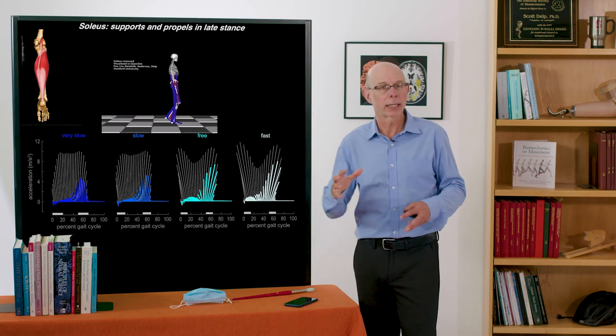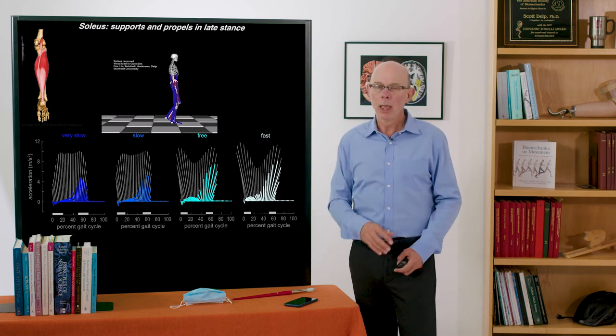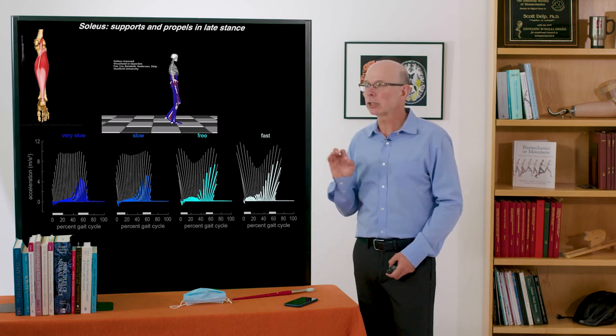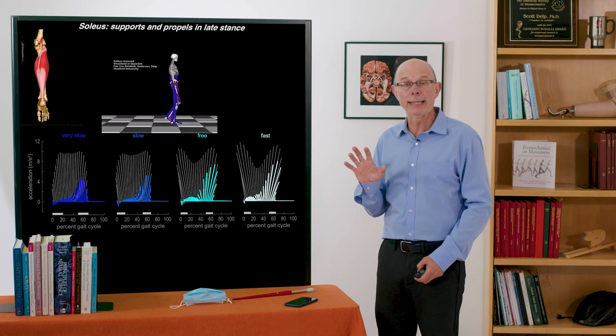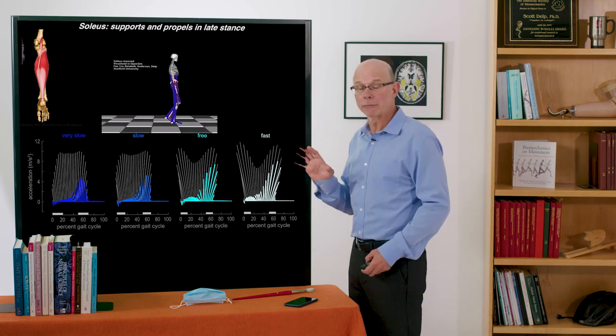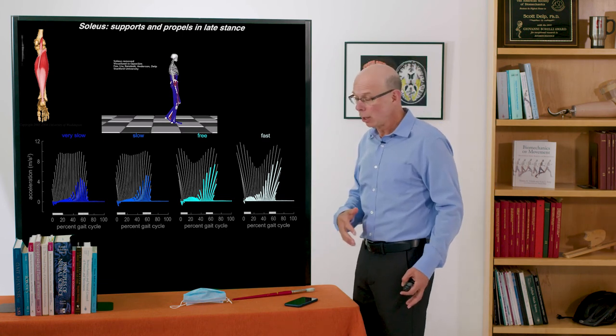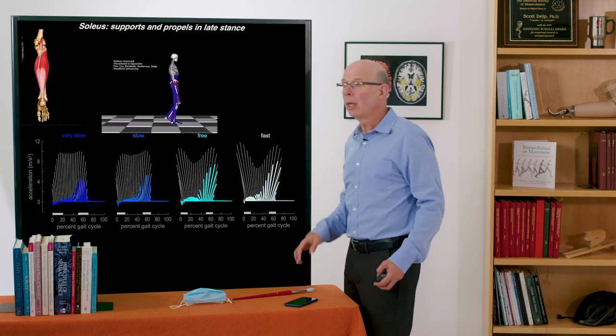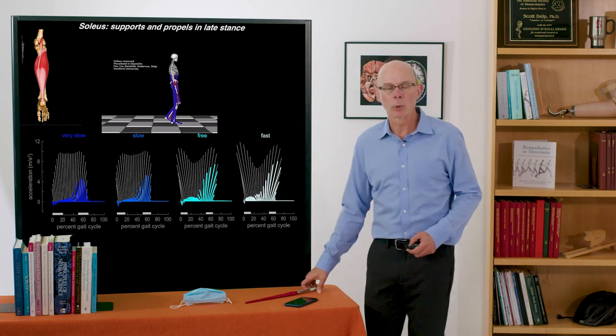At fast we get more of the same but at slow, remember VASTI and Gmax, they kind of shut down and didn't do much. Soleus is essential even at slow and very slow speeds. We need that at the end of the stance phase because the knee is more flexed. You're beginning to load the other limb. You need it for the forward propulsion and body weight support.